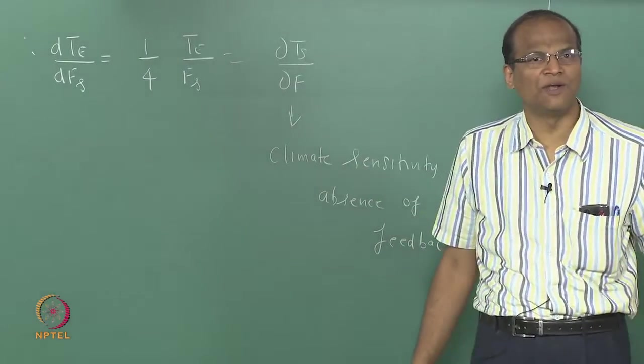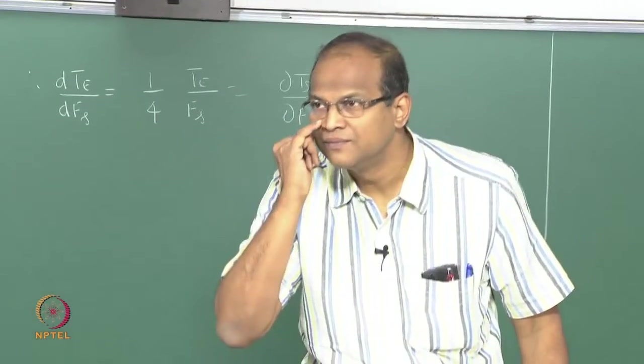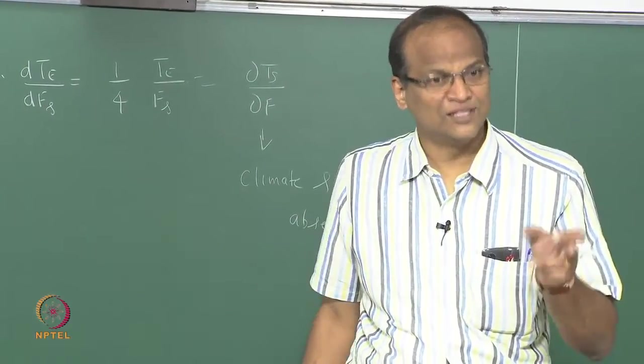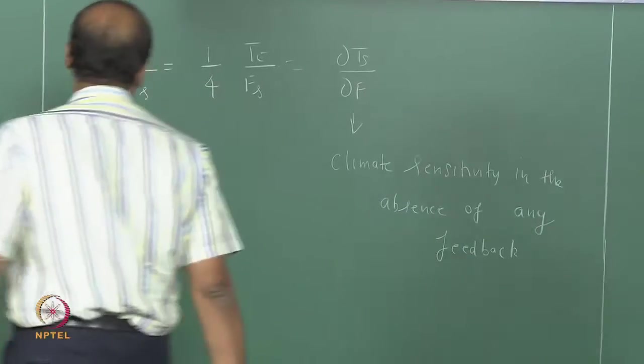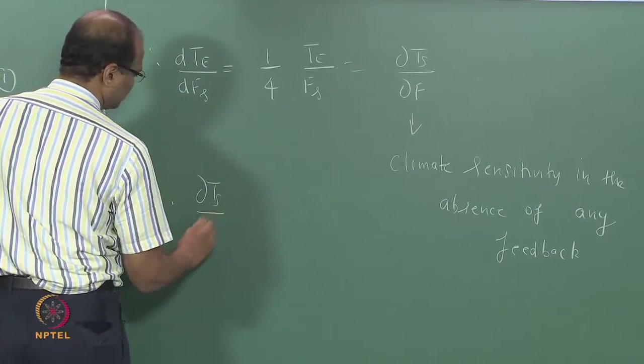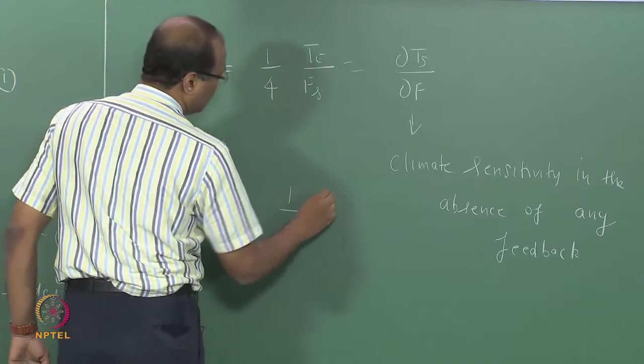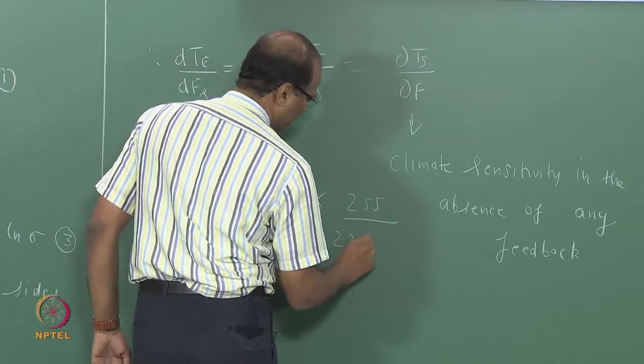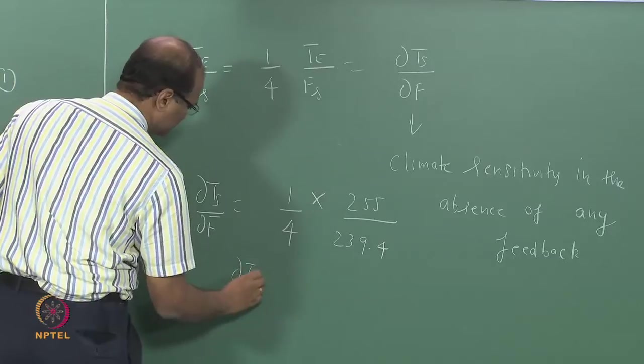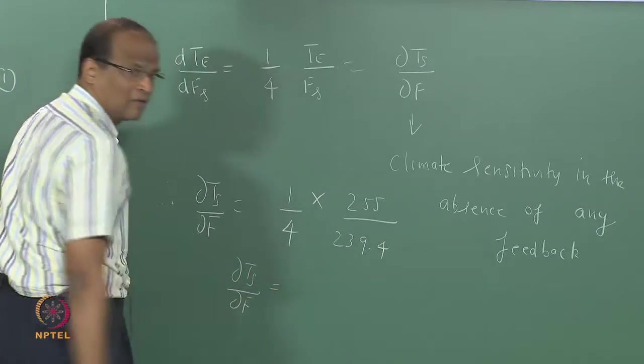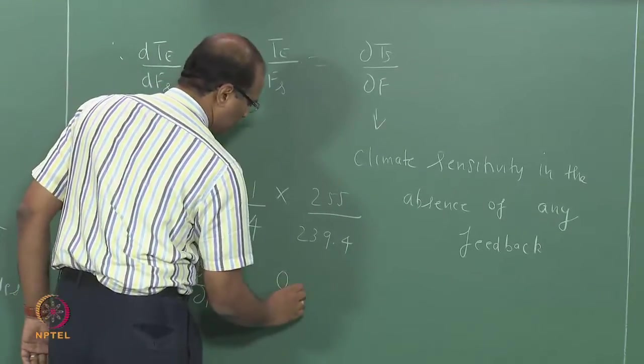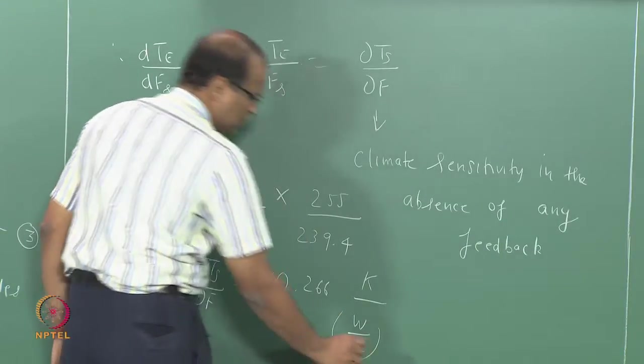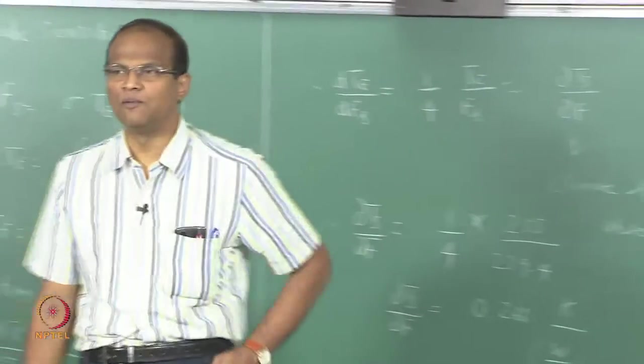If that F_s itself changes, what happens? Instead of the 239 watts per meter square, it becomes 240 watts per meter square. What will happen? Everything is benchmarked with respect to the change in that F_s. That is how we define the radiative forcing. So, how much was this? 255. So, the sensitivity has got the units of Kelvin divided by watts per meter square.